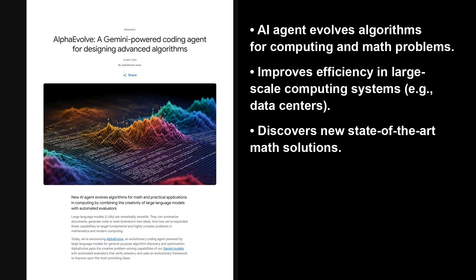That's a key piece of code, cutting total training time by 1%. It also advanced math problems, like the kissing number. AlphaEvolve is the tool here.